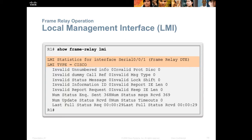Show frame-relay LMI will provide information about the Frame Relay circuit — whether it's up, what type of circuit it is, either ANSI or Cisco. LMI is basically a local management messaging system between your router and the Frame Relay network, so the Frame Relay network is able to communicate to your router. We can see here some timers showing when those communications have happened.